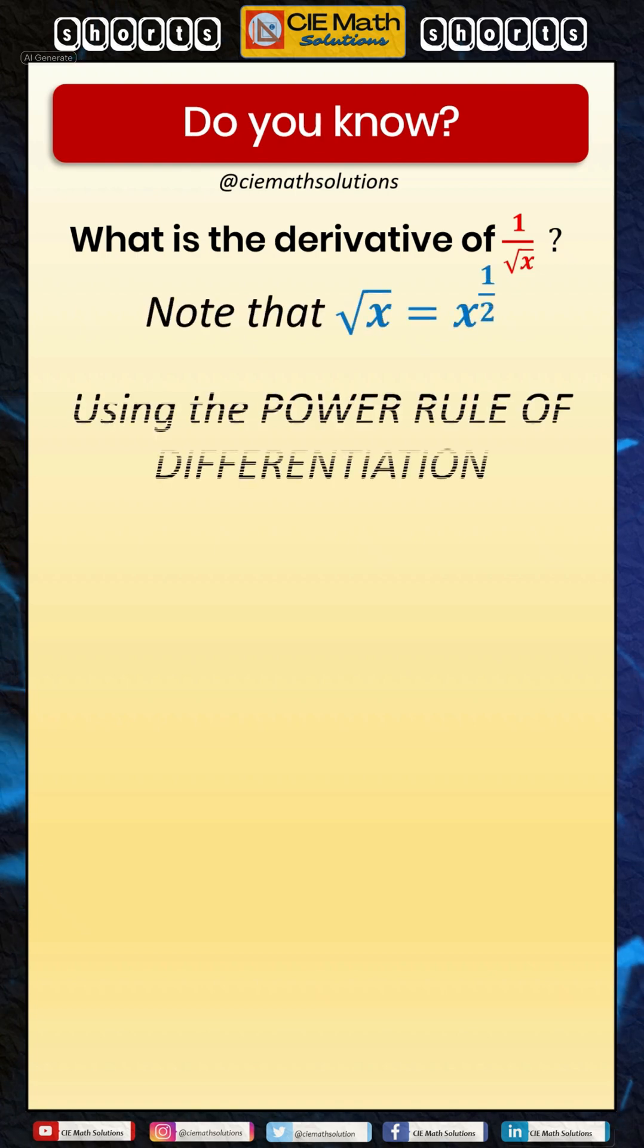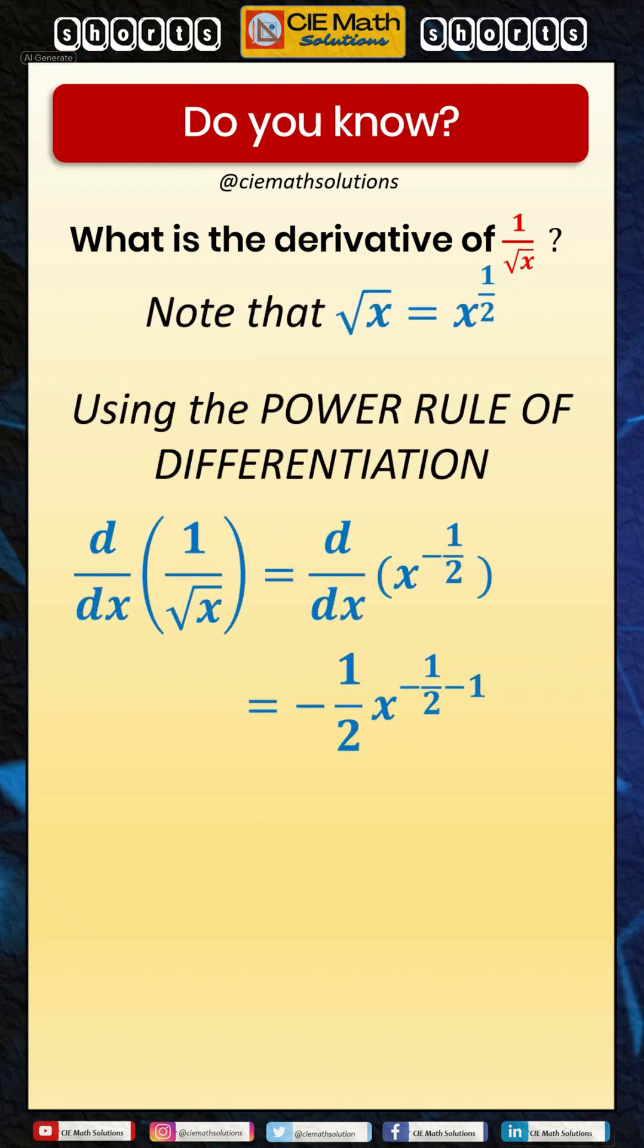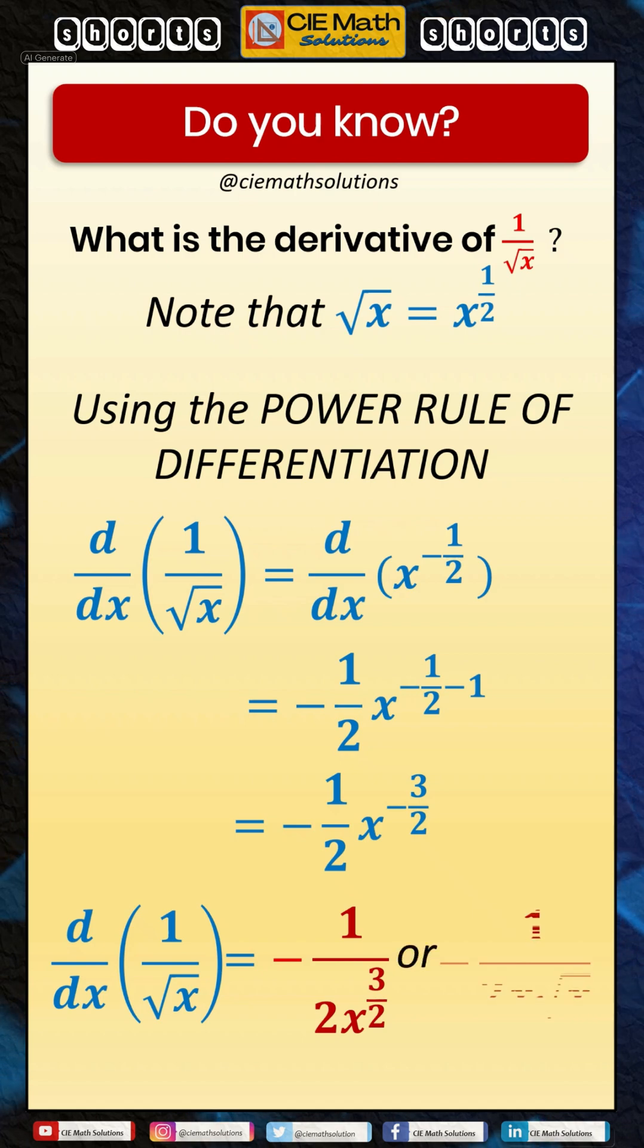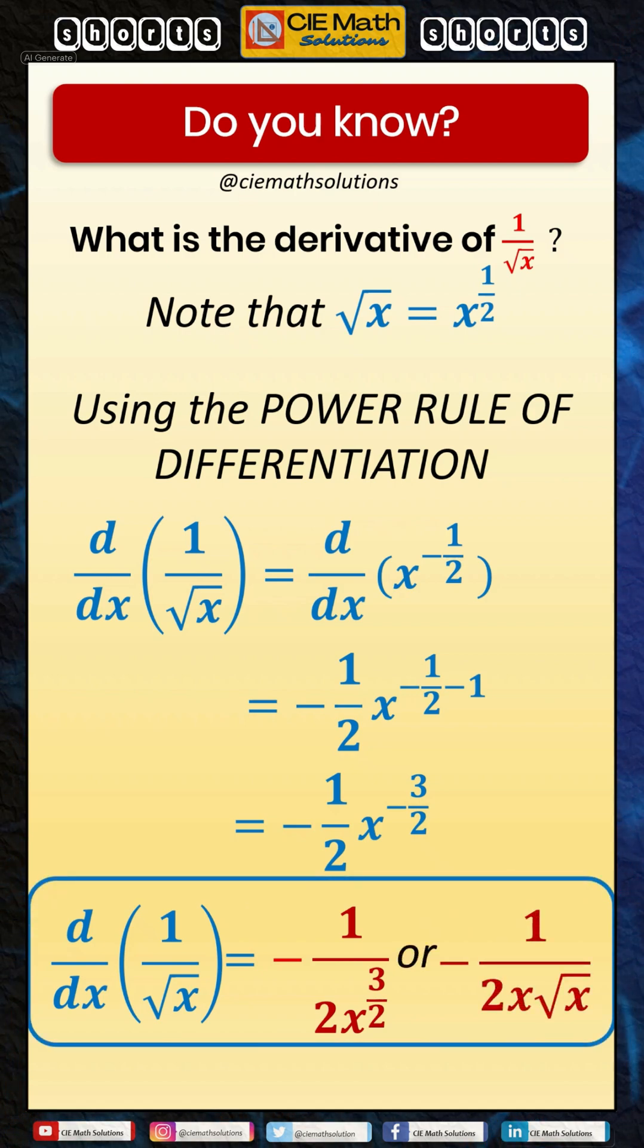Let us now find the derivative of 1 over the square root of x. Rename the square root of x using fractional indices, then use the power rule of differentiation to find the derivative, then simplify. This gives us the answer of negative 1 over 2x raised to 3 over 2.